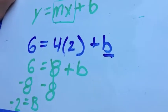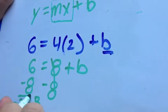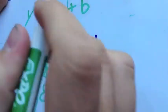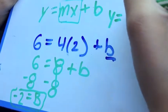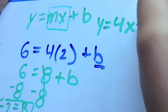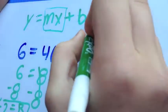So negative 2 equals b. Then you can plug that back into the original equation. Exactly! Because you have your b and your x and m. So you do y equals 4x minus 2. And there you have it.